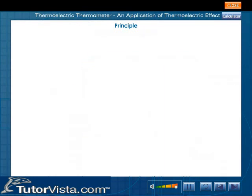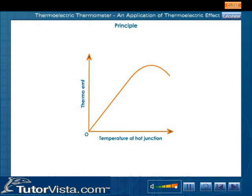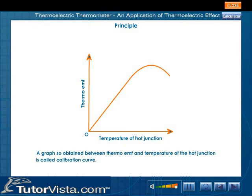Keeping the hot junction at different temperatures, the thermal EMF is measured using the calibrated galvanometer. A graph is plotted between the thermal EMF developed and the temperature of the hot junction. This graph is called a calibration curve.